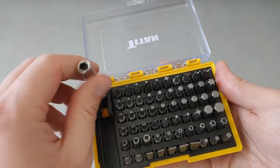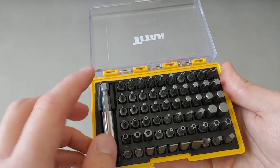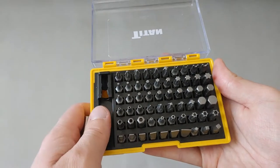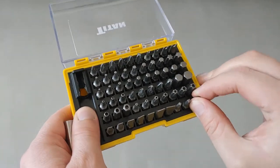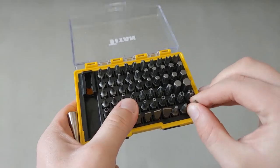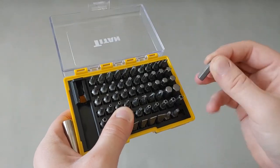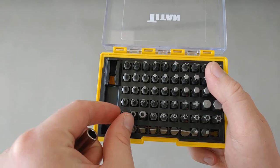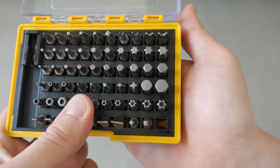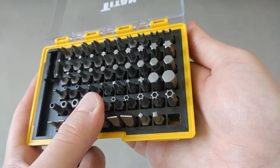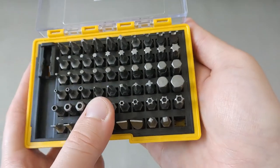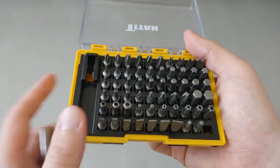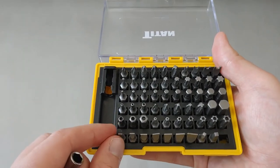This particular bit holder itself is 60 millimeters in length. Let me show you the strength of the magnet. One particular downside to this bit set is the bits are very close to each other. You can see the bits are held in via clips as well. It makes some of these difficult to get out—that's the downside to it.